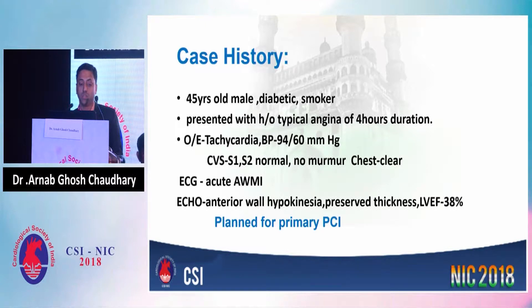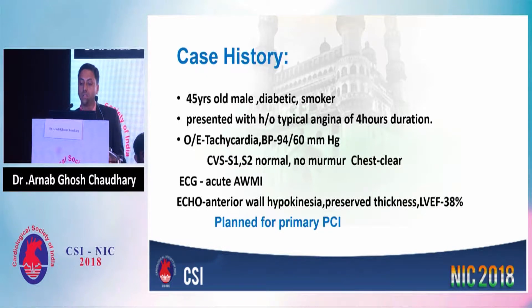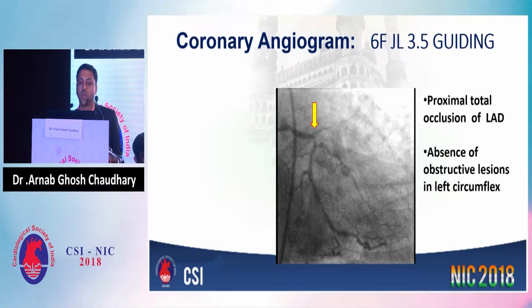ECG-wise, there was acute anterior wall MI. Echo showed anterior wall hypokinesia with preserved thickness and LV ejection fraction of 38%. So we planned for primary PCI.